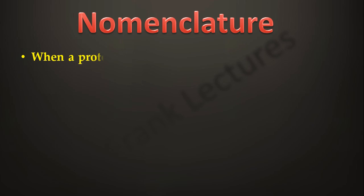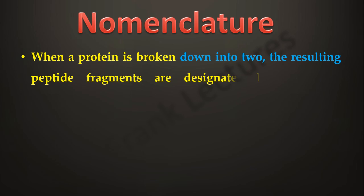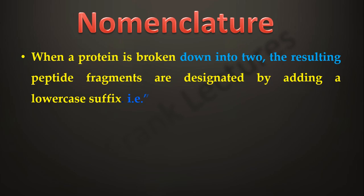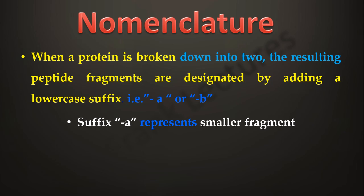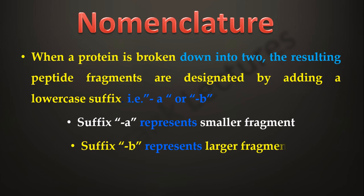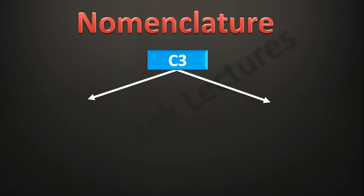In the complement system, when a protein is cleaved or broken down into two, the resulting peptide fragments are designated by adding a lowercase suffix — either 'a' or 'b'. Suffix 'a' represents the smaller fragment and suffix 'b' represents the larger one. For example, complement protein C3 is cleaved and two fragments are produced: the large one is represented by C3b and the smaller fragment is represented by C3a.